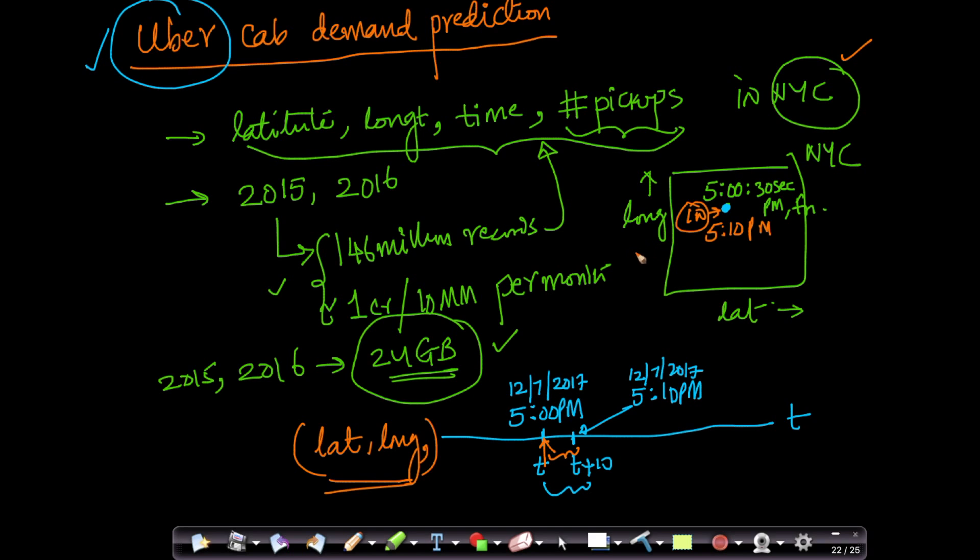So that way both drivers, passengers, and cab companies like Uber are super happy. Because the driver knows that he'll surely get a pickup which means he'll make money. The Uber company is good because they get a cut out of that money. And the passenger is extremely happy because his wait time from the time he placed an order for a cab to the time he actually gets into the cab is very low.